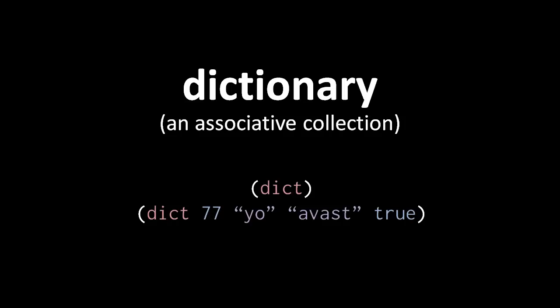To create a dictionary we use the dict operator. In the top expression here we create an empty dictionary, and in the bottom expression we create a dictionary with two key-value pairs. The key-value pairs are written with the key first followed by the value, so in this example the key 77 has the value yo, and the key avast has the value true.